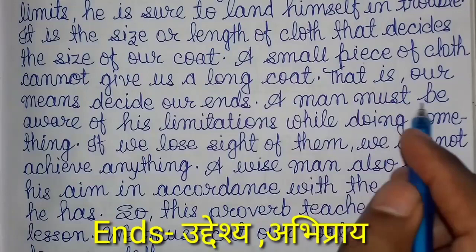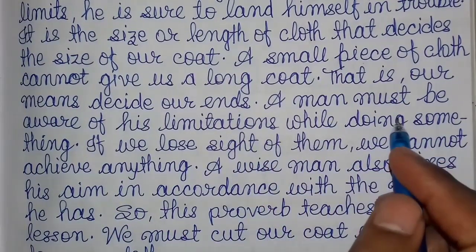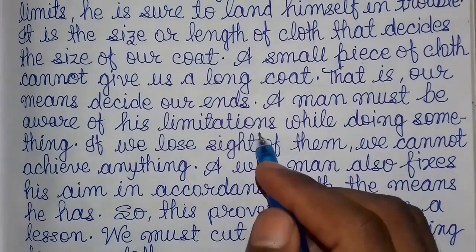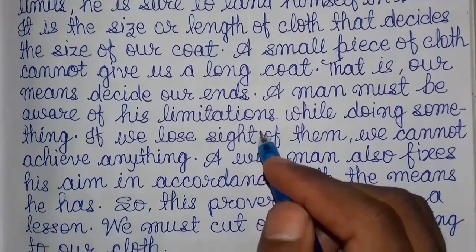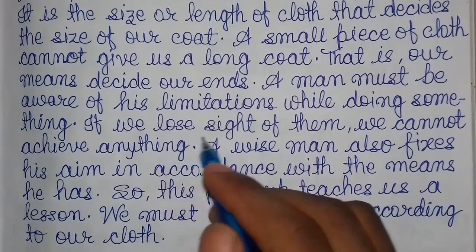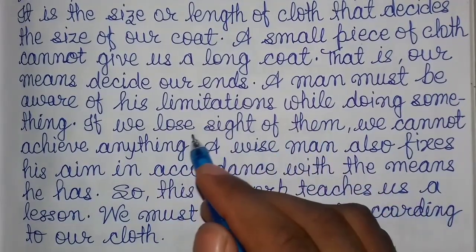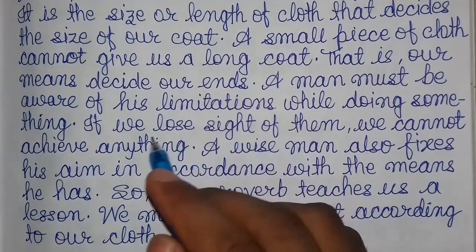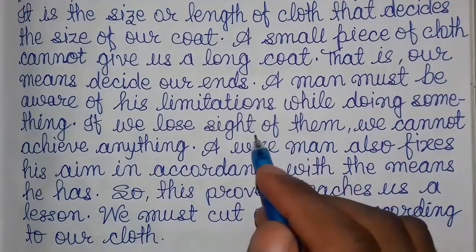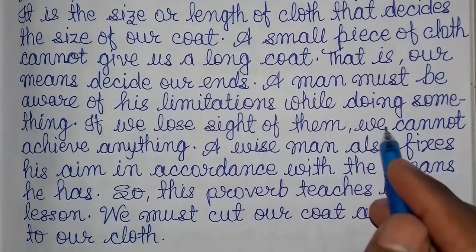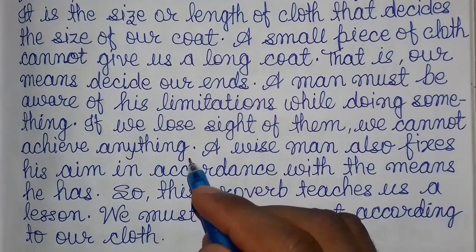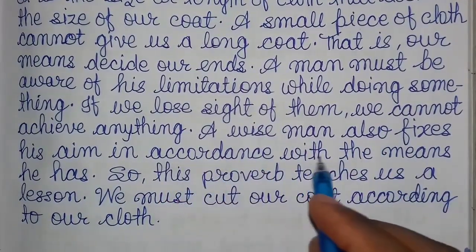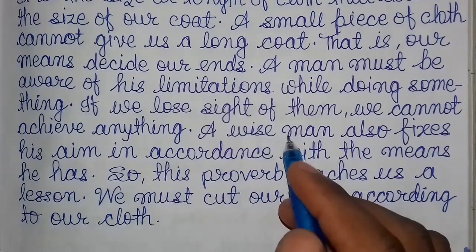A man must be aware of his limitations while doing something. If we lose sight of them, we cannot achieve anything. A wise man also fixes his aim in accordance with the means he has.